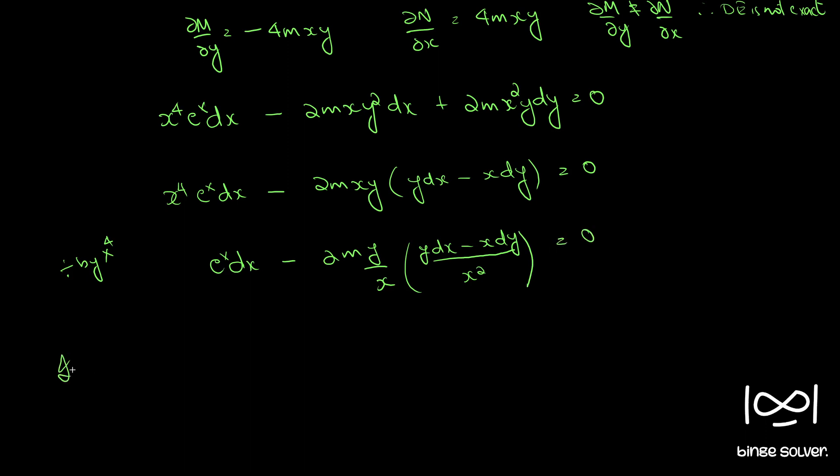Now we can integrate this easily. Before integrating, we can write this as d of e raised to x plus d of (2m y over x) into d of (y over x). So this is equal to 0, or 0 can be written as differential of a constant.